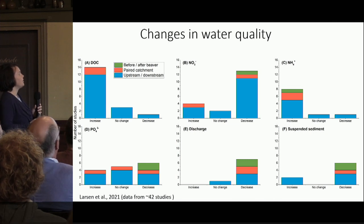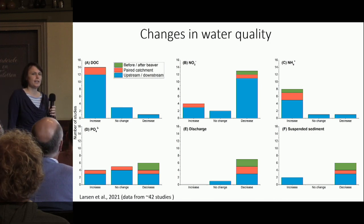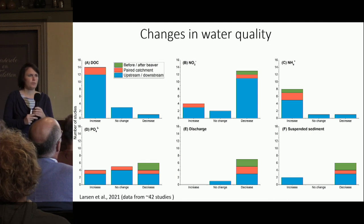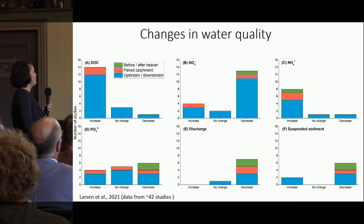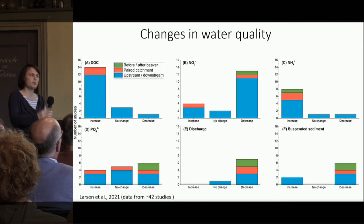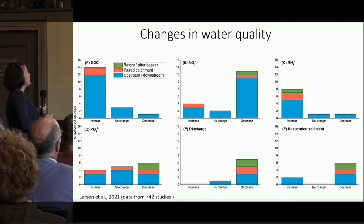This is what we found overall in the literature: the changes in water quality due to beaver damming. The picture is relatively clear. We have definitely an increase in DOC — dissolved organic carbon — downstream of beaver dams. This means an increase in freshly microbially derived carbon downstream of beaver dams: we have a lot of microbes in all these ponds, they degrade the carbon collected in the ponds, and we get an increase of carbon downstream. This carbon then becomes food for other animals downstream of the beaver dam.